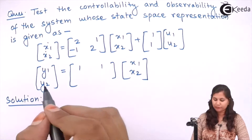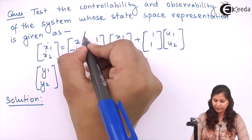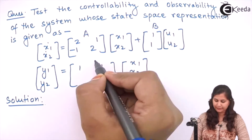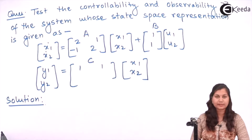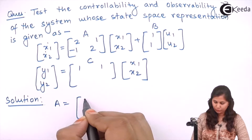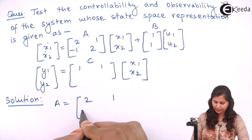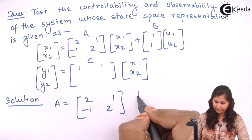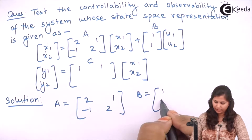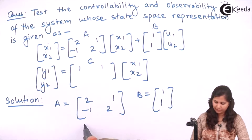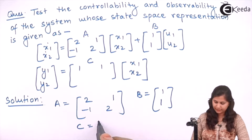Through this state model, we can find out the A, B, and C matrices. So the A matrix is [2, 1; -1, 2], B matrix is [1; 1], and C matrix is [1, 1].